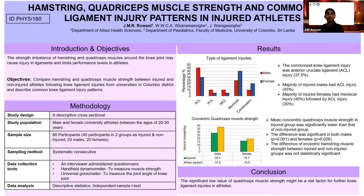Methodology: a descriptive cross-sectional study was done using male and female university athletes between the ages of 20 to 30 years. I selected three universities in the Colombo district: University of Colombo, University of Moradu, and University of Sri Janavardhanapura. 80 participants were selected and grouped as injured and non-injured.